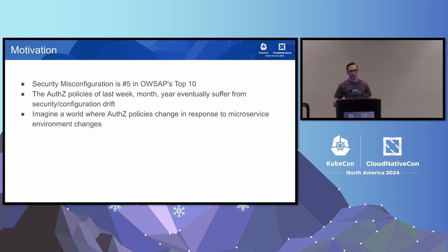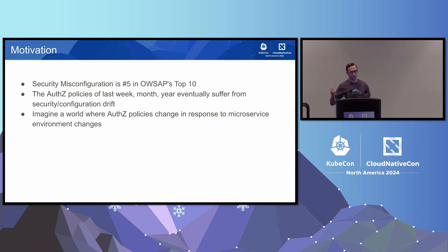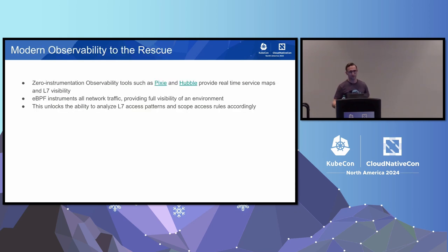So why do we care about automatic authorization? The OWASP top 10 has security misconfiguration listed at number five. The authorization policies that people use last week, last month, last year, eventually suffer from security and configuration drift. Products are sunsetted, teams change, the organizational boundaries are drawn differently, and people forget to fix and make the boundaries of your authorization to match the world today. I'd like to see a place where authorization policies actually change in response to microservice environment changes.